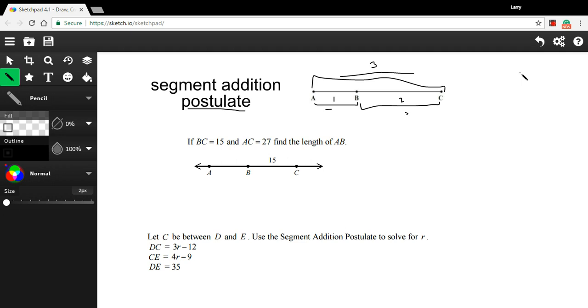Let's look at a couple problems that use this. This first one says if BC equals 15, and they've got that labeled here, so that's the segment from B to C. And it says AC equals 27, so let's go ahead and label that ourselves from A to C. That's that whole length there.